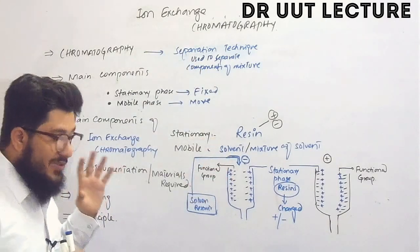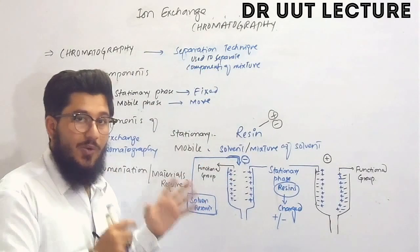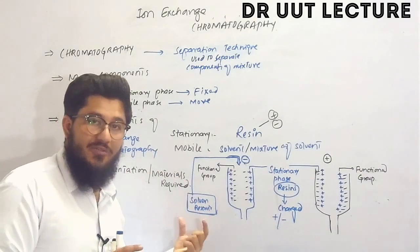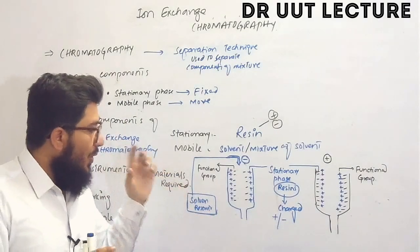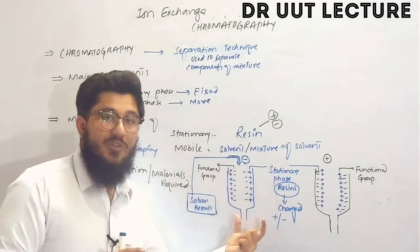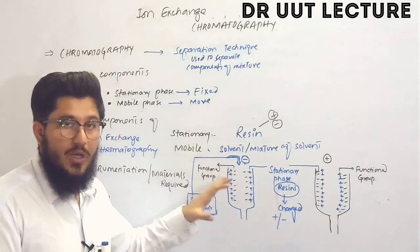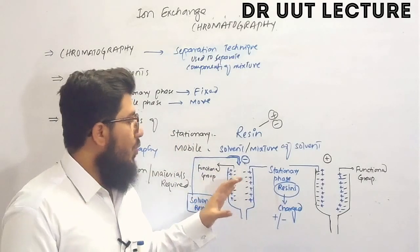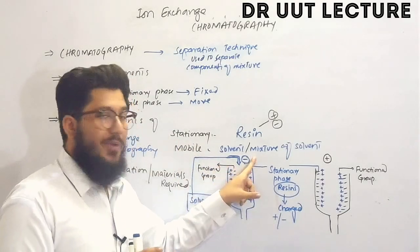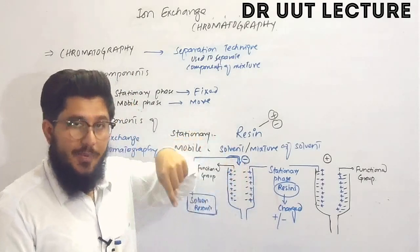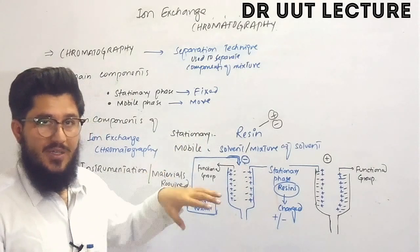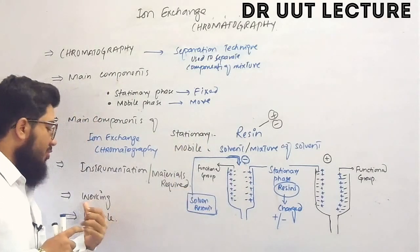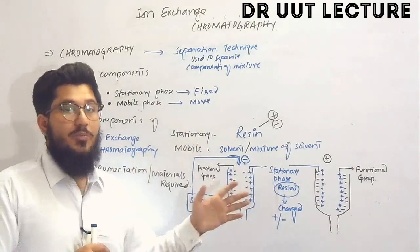Now let's look at the instrumentation or materials required to perform ion exchange chromatography. We need a solvent reservoir in which we place our mobile phase, a column in which we fix our stationary phase, and our sample which is going to be separated.